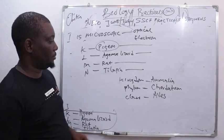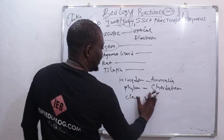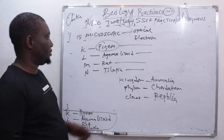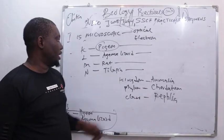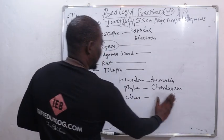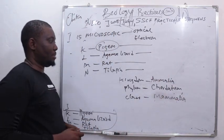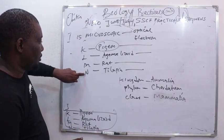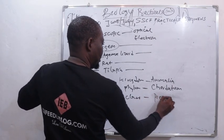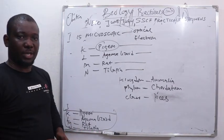For agama lizard it is the same thing: Kingdom Animalia, Phylum Chordata, but Class Reptilia. For rat, the same, under the Class Mammalia. For specimen N, tilapia, the class is Pisces.